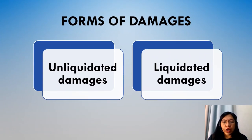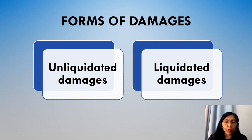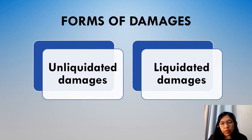The topics of this presentation will cover the different forms of damages, a demonstration on how to succeed in the submission of a claim for damages, the methods of calculation of damages and their application, and a review of common issues relating to damages for delays to completion. Generally, damages has two forms: unliquidated damages and liquidated damages, which we will discuss in detail in the next slides.